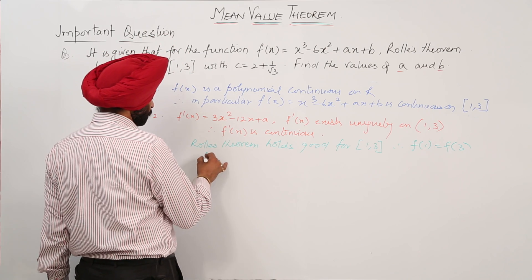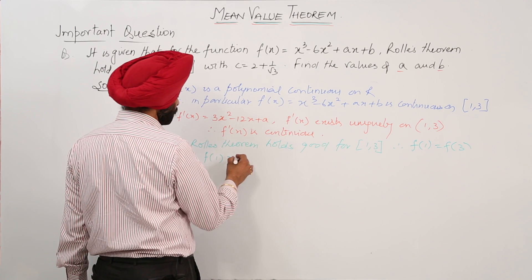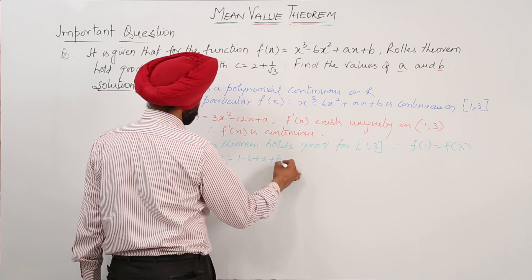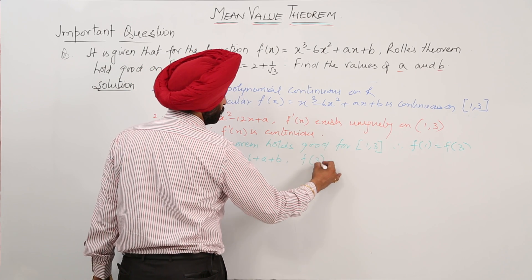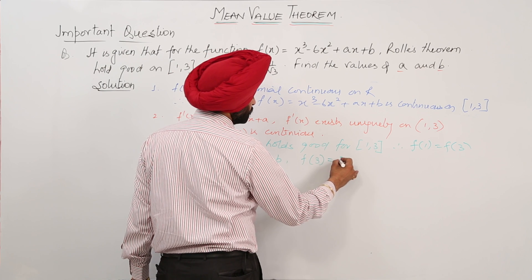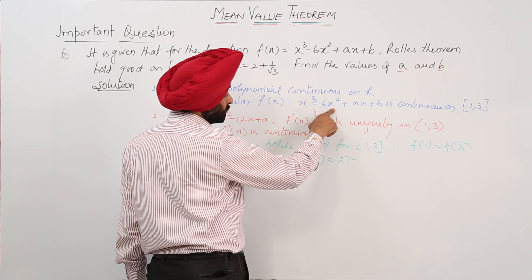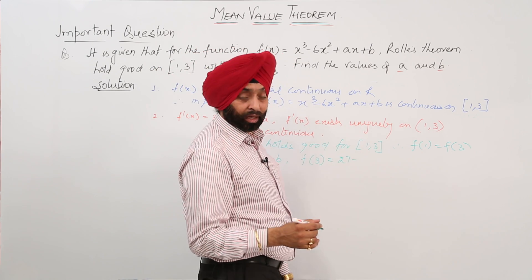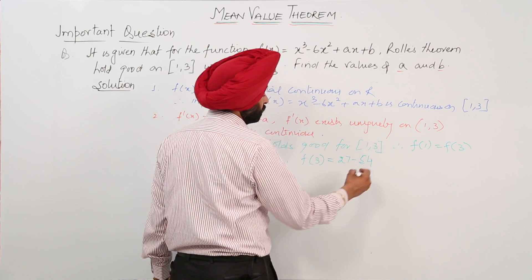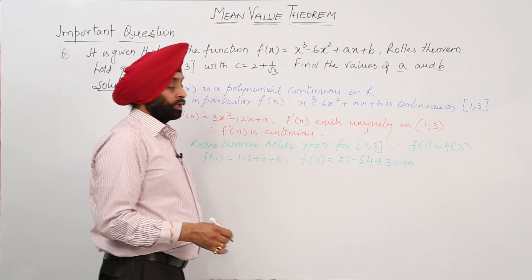Now, solving this one, f(1) = 1 - 6 + a + b. And f(3) = 27 - 54 + 3a + b. That is 27 minus 3² with 6, so negative 54, plus 3a plus b.